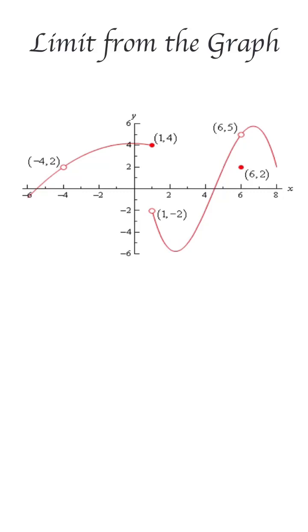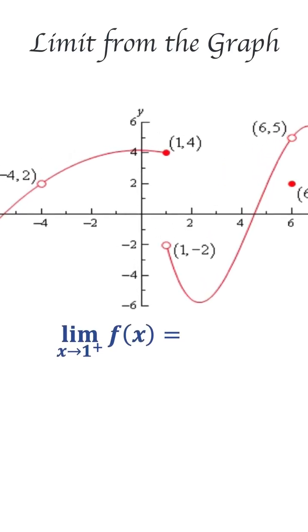For the function graph below, identify each limit or state that it doesn't exist. Let's start by the first question. They said limit as x approaches 1 plus. For the function, to find the limit as x approaches 1 plus.